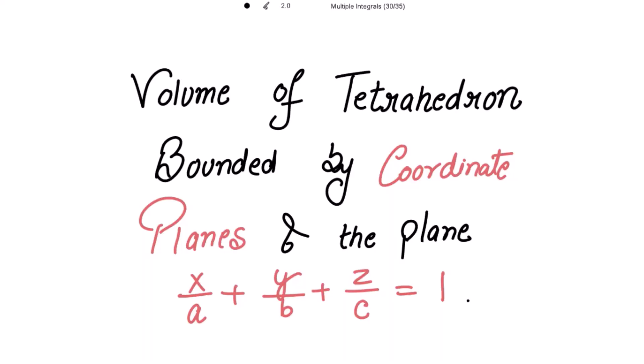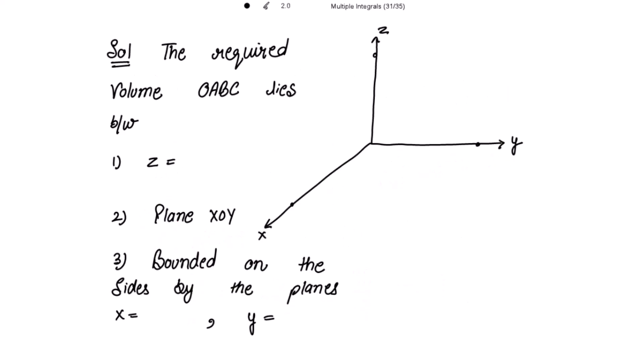We need to find the volume of the tetrahedron bounded by the coordinate planes and the plane x/a + y/b + z/c = 1. Here are the x-axis, y-axis, and z-axis. Let me mark the points a, b, and c and join these points to make a tetrahedron.